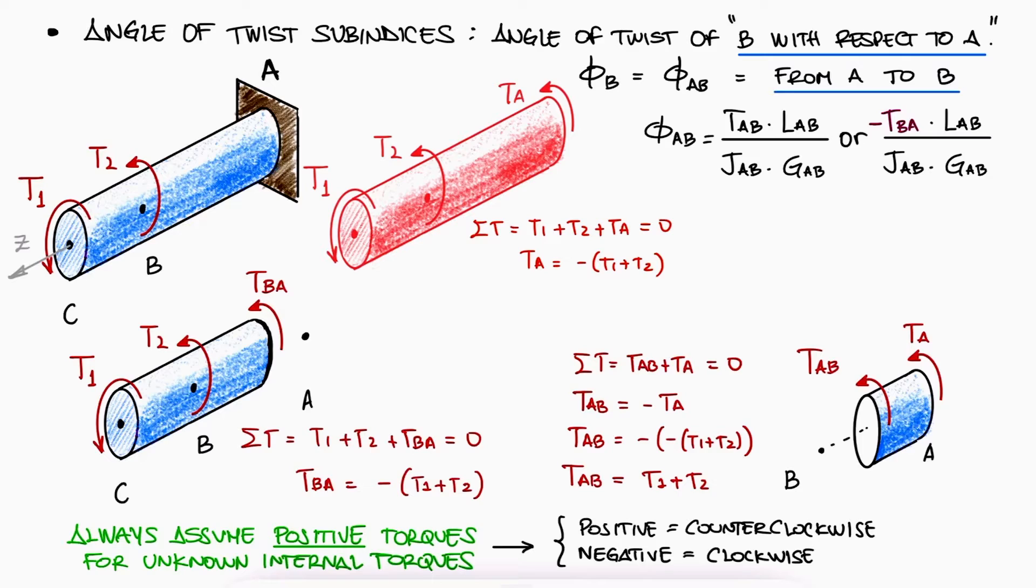As you can see, TBA and TAB have the same magnitude and just like I was previously stating, one of them is positive and the other one is negative. The positive one indicates that TAB is in fact counterclockwise and the negative value of TBA indicates it's clockwise.